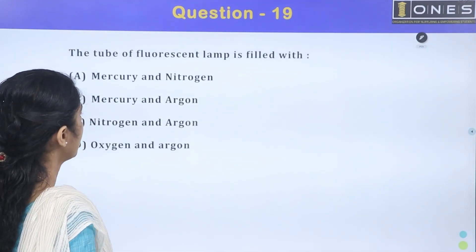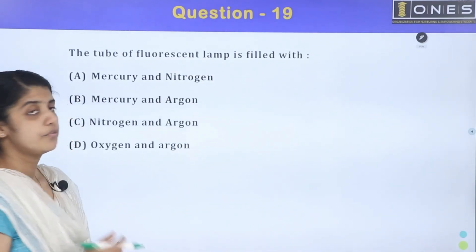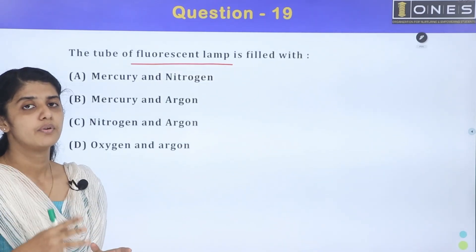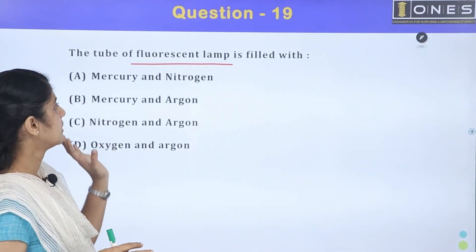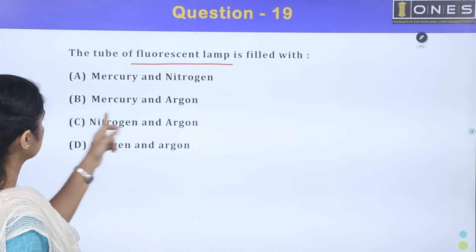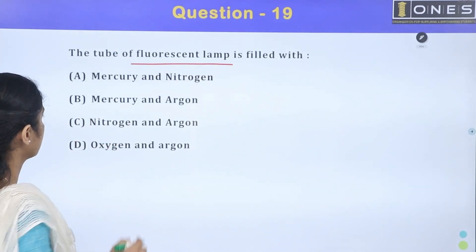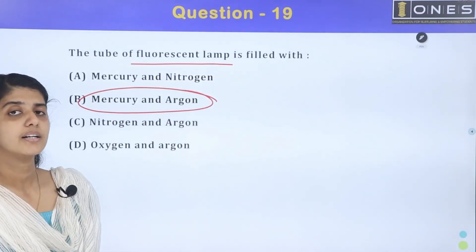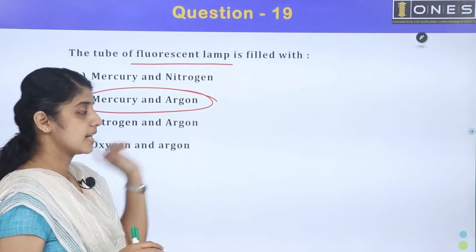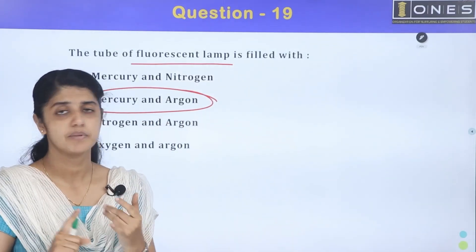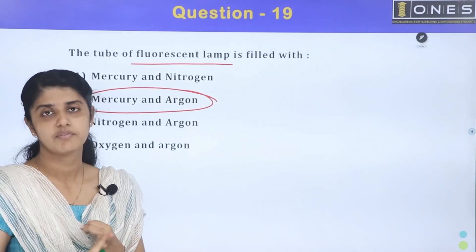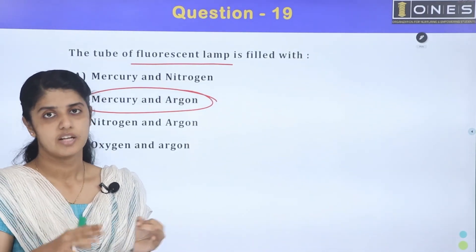The tube of fluorescent lamp is filled with. Fluorescent lamp construction. Where is the flame in fluorescent lamp? What is filled in fluorescent lamp? The options are Mercury and nitrogen, Mercury and Argon, nitrogen and Argon, oxygen. Mercury plus Argon filled in fluorescent lamp. This is in the name. Sodium vapor lamp has sodium.